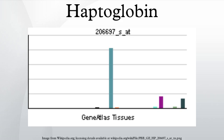In clinical settings, the haptoglobin assay is used to screen for and monitor intravascular hemolytic anemia. In intravascular hemolysis, free hemoglobin will be released into circulation and hence haptoglobin will bind the hemoglobin. This causes a decline in haptoglobin levels.